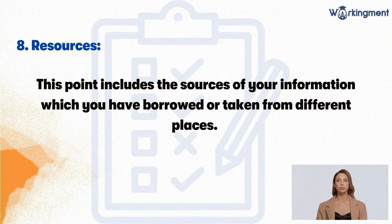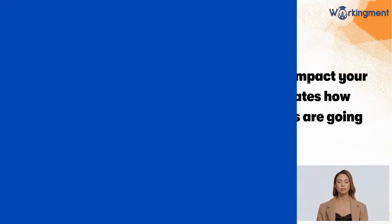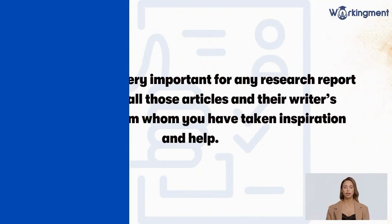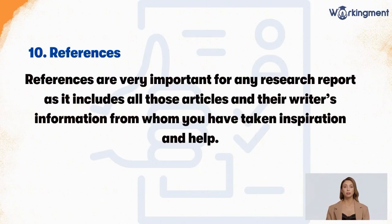Eight: resources. This point includes the sources of your information which you have borrowed or taken from different places. Nine: expected outcomes. This part includes the possible results and impact your study is going to have on society. It states how viable your research is and whether the outcomes are going to benefit anyone.